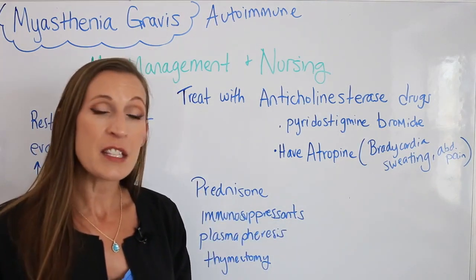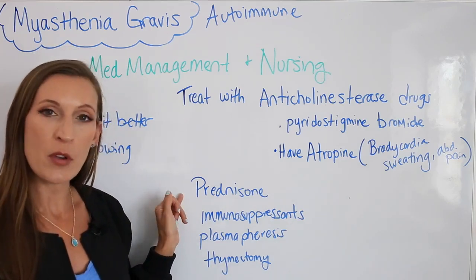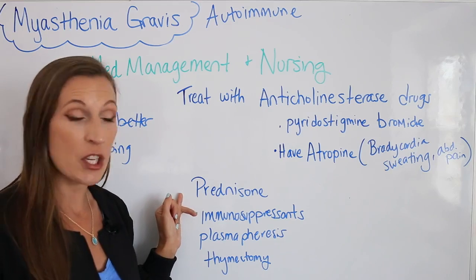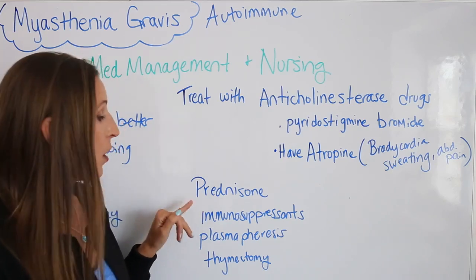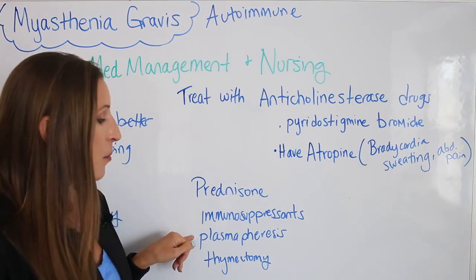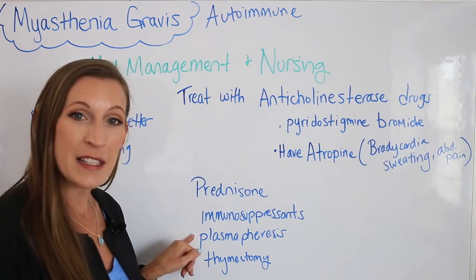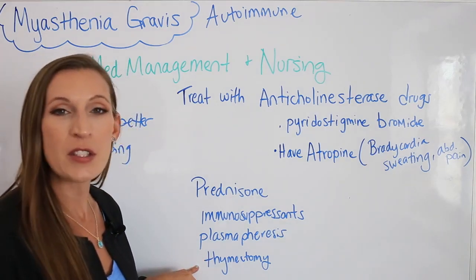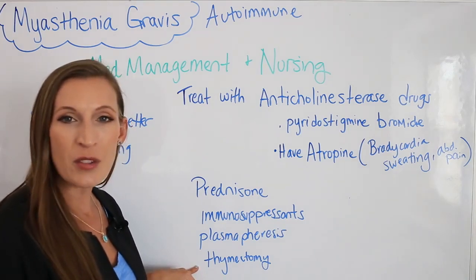Other drugs these patients will take include prednisone, a corticosteroid that helps decrease inflammation and also suppresses the immune system. They may also receive specific immunosuppressants. Plasmapheresis is done to remove the antibodies from the system. And a thymectomy may be performed — if they determine the patient has an enlarged thymus gland, they'll simply remove it.